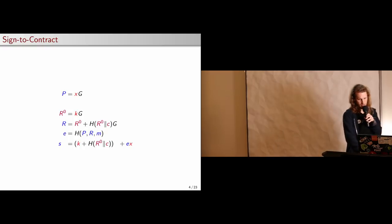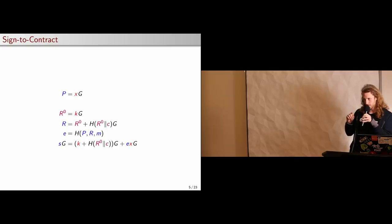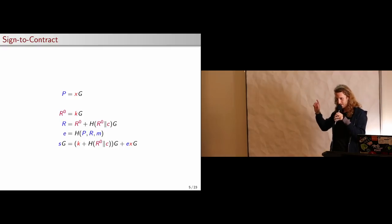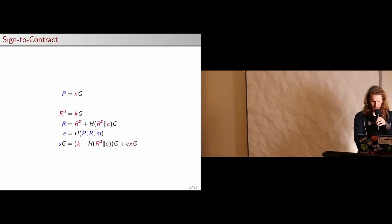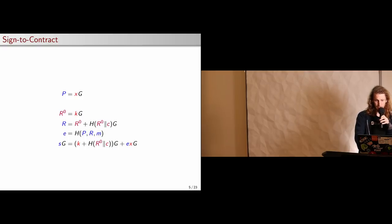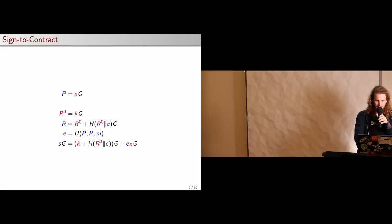That's useful for timestamping. It's useful for another thing which I will get to at the end of my talk, and it's useful for a weird application which I'm going to try to describe here. First, here's my verification equation — it hasn't changed. Just multiply everything by G.